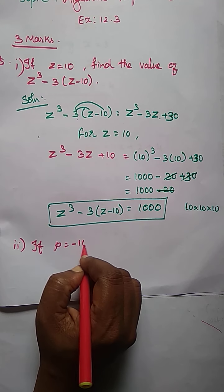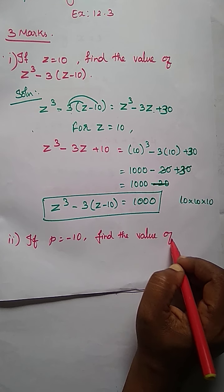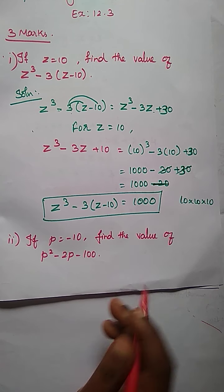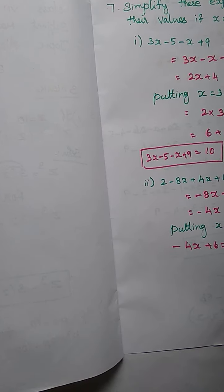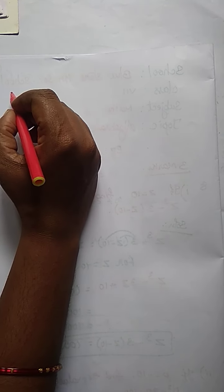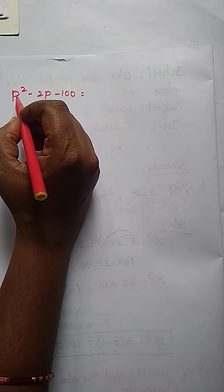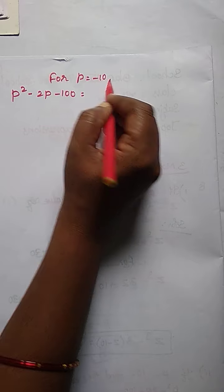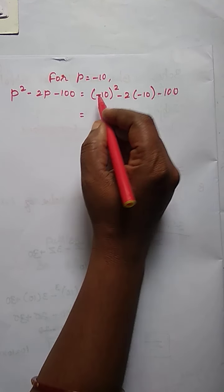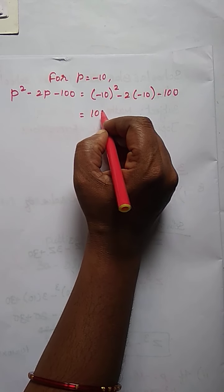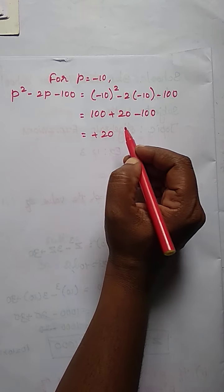Second subdivision: If P is equal to minus 10, find the value of P square minus 2P minus 100. P value is equal to minus 10. So substitute the value of P is equal to minus 10. Write the expression: P square minus 2P minus 100 is equal to — for P equal to minus 10, substitute: minus 10 square minus 2 into minus 10 minus 100. Minus 10 into minus 10 is 100; minus into minus plus, so plus 100. Next, minus into minus plus, 2 tens of 20, minus 100. Plus 100 minus 100 is 0, plus 20 is the answer.